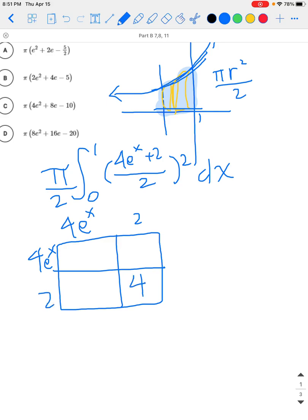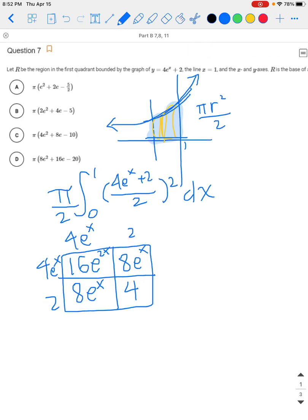This is going to be 4, this is going to be 8e^x, this is going to be 16e^(2x), and then over here we have 8e^x. So ultimately what we have from just the numerator squared is going to be what we have in this box.